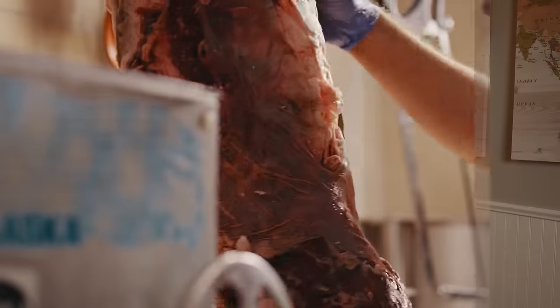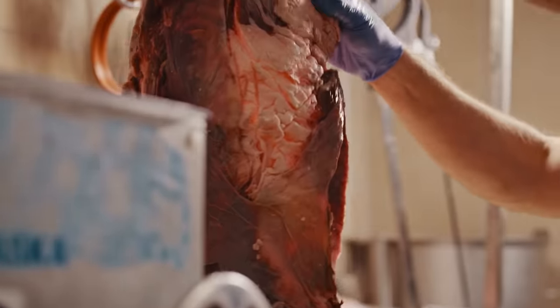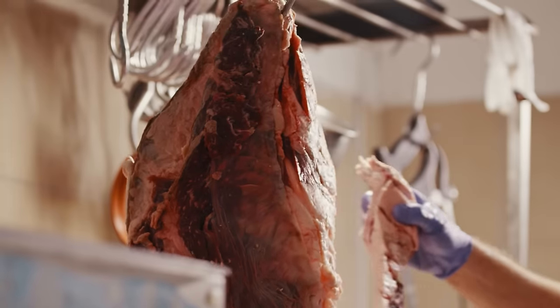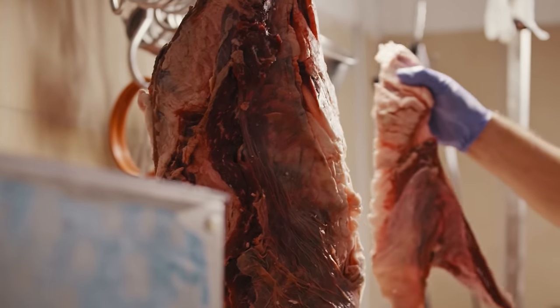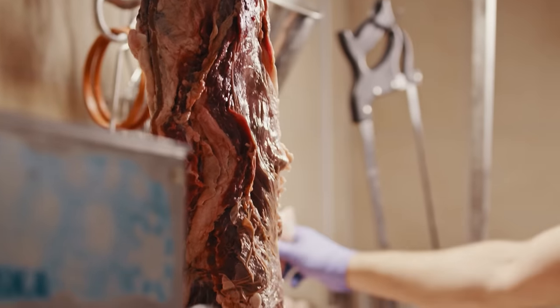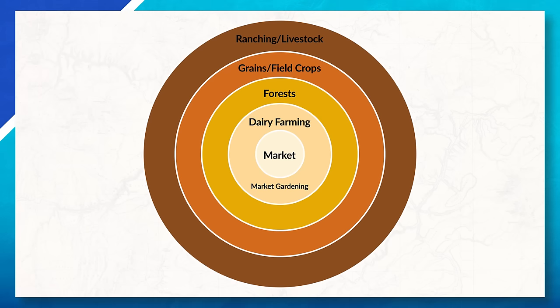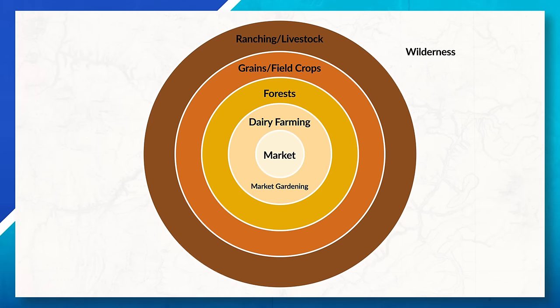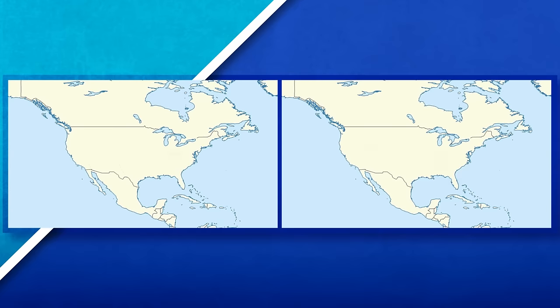The second answer is that livestock can walk to the market. Cattle would be taken from the outer ring and walk to the market or slaughterhouse, saving on transportation costs and allowing for the processing of meat to occur near the market where it can be transported quickly for sale. If we move past the last ring of von Thunen's model, we get to the wilderness, where there wouldn't be any commercial agriculture — it's simply too far away from the market to generate a profit.